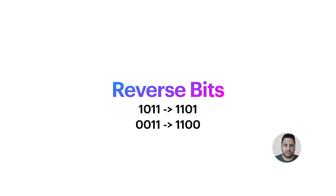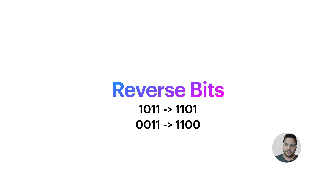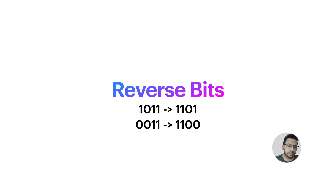Let's consider this problem statement where we are given bits and we have to reverse them. For example, consider the bits 1011 — the resulting output will be 1101. Another example would be 0011, and its output should be 1100.